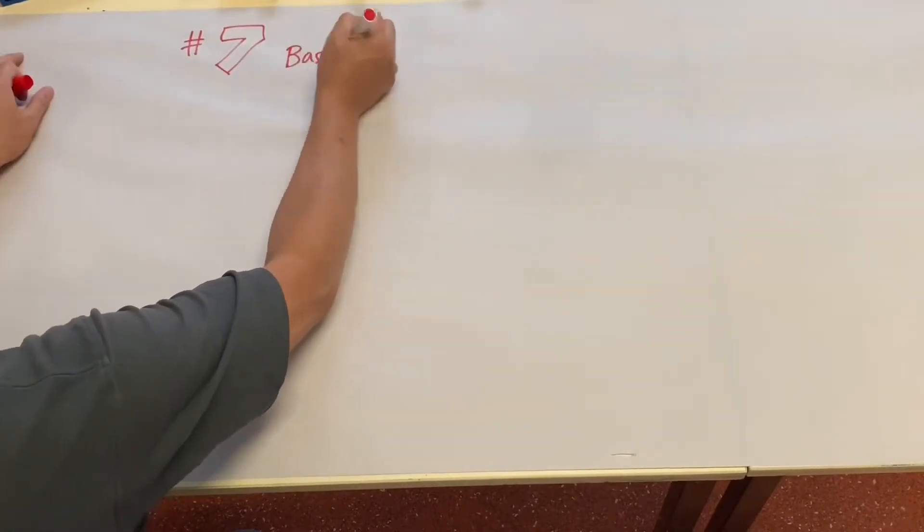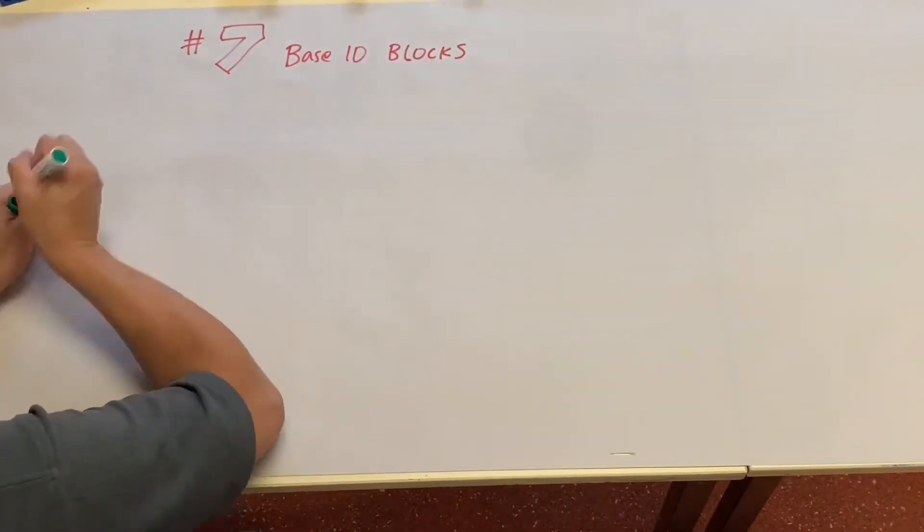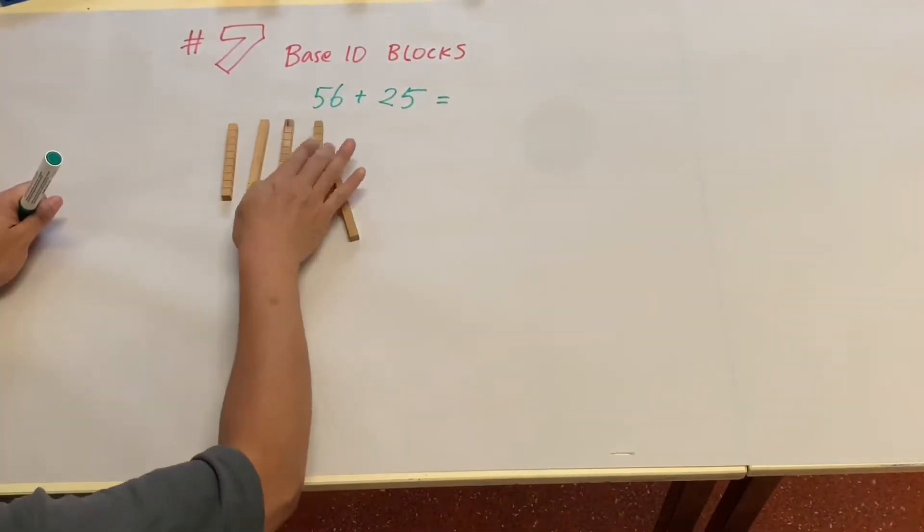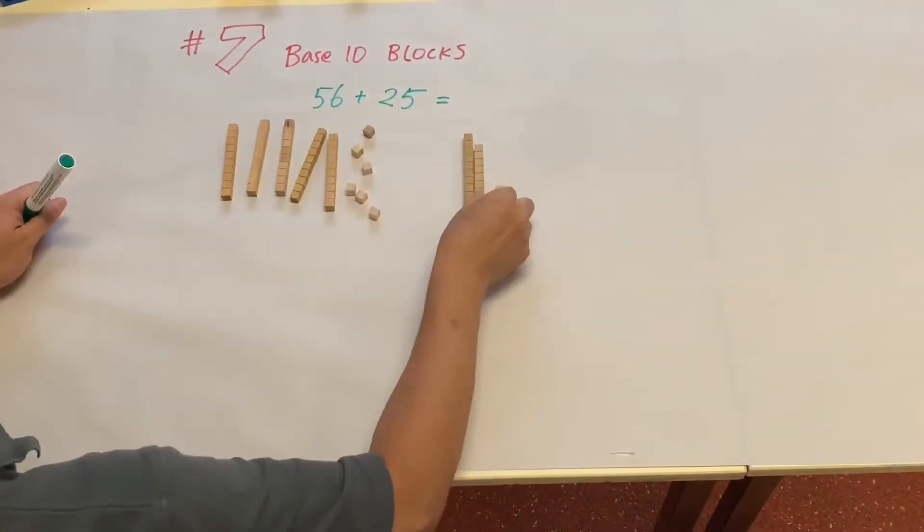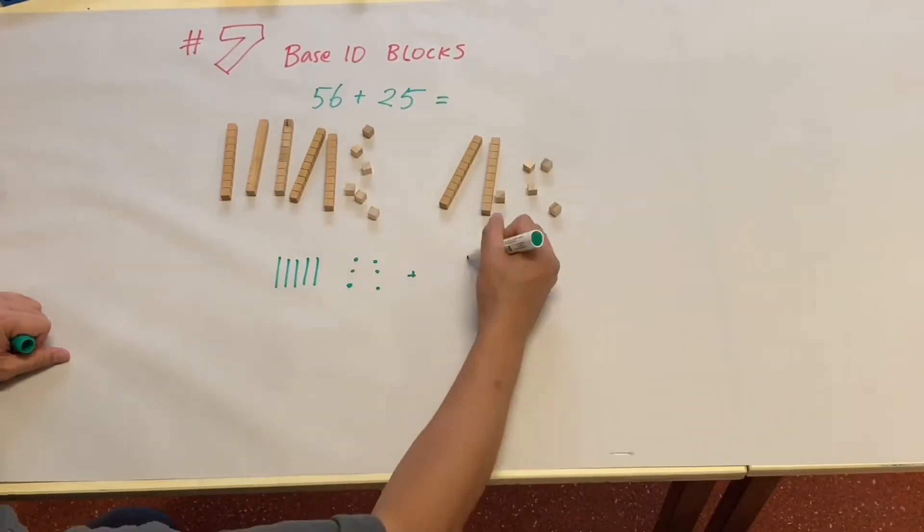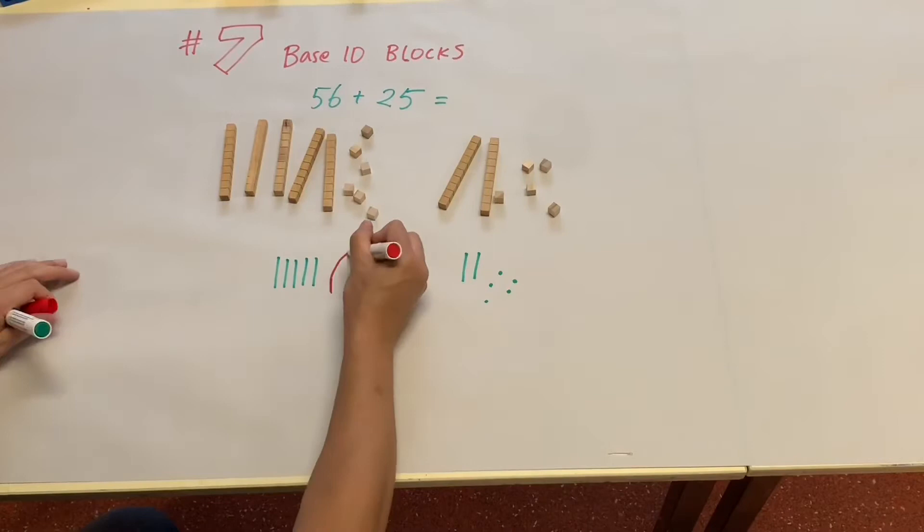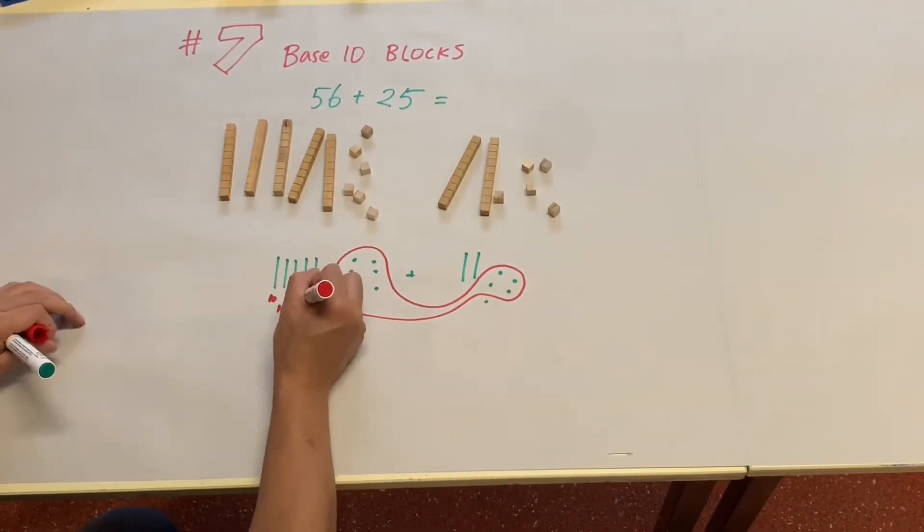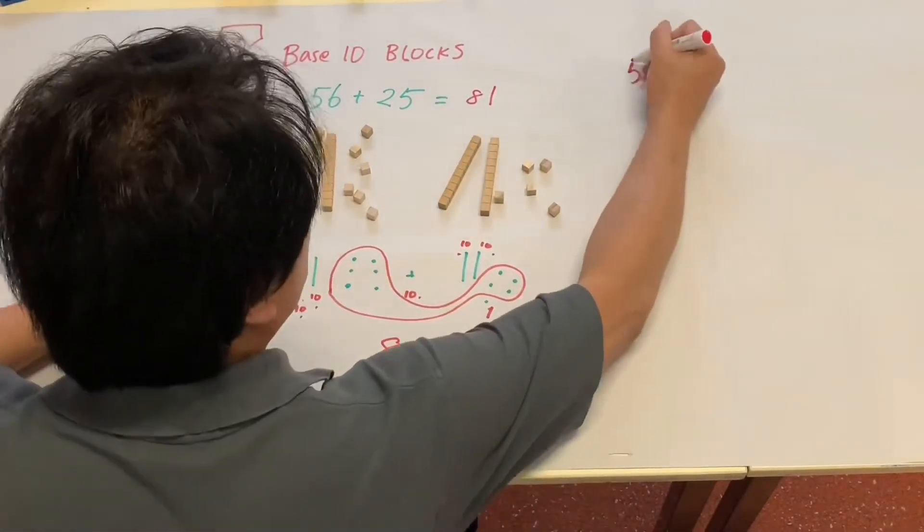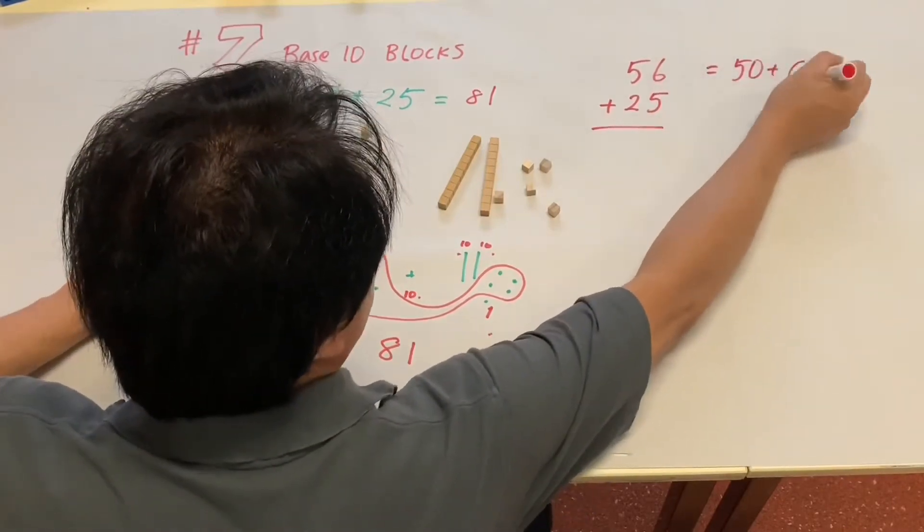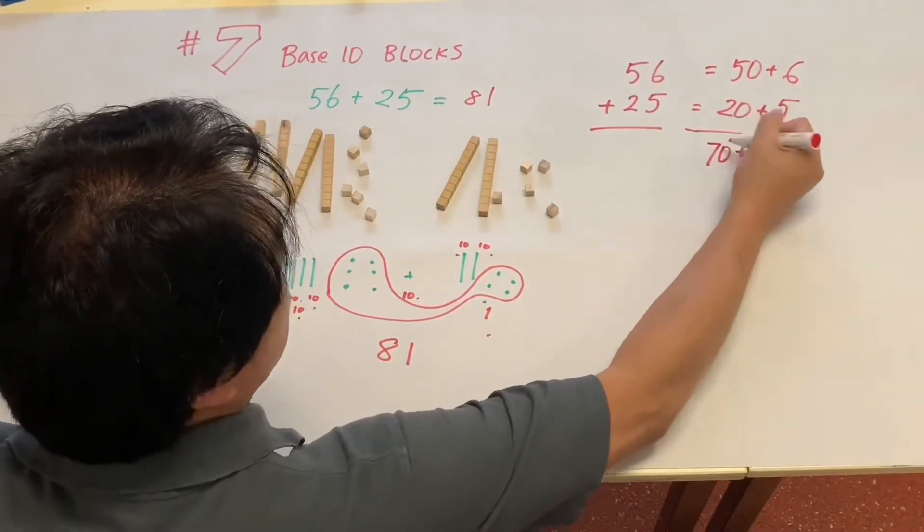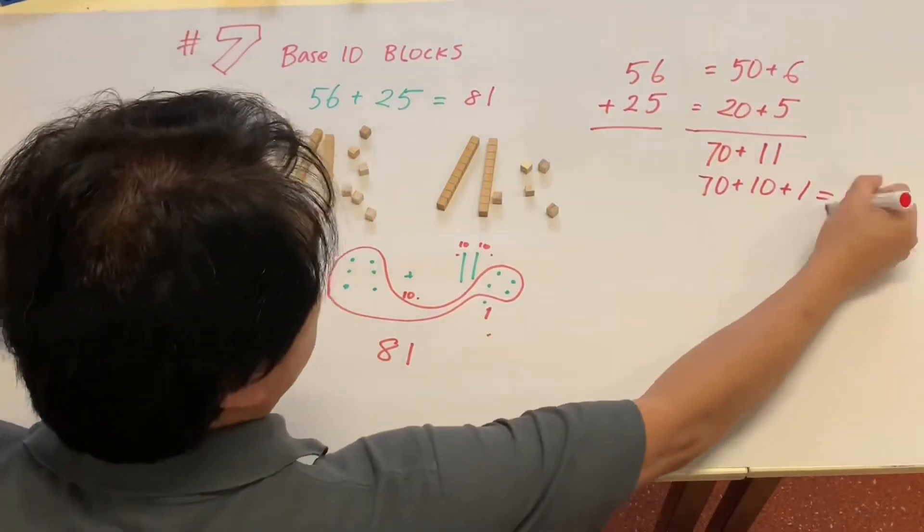Video number seven we're going to use base 10 blocks. So the example is 56 plus 25. It is important to use concrete material, also the drawing representation. So 56 plus 25, using the 5 and a 4 to make 10, the answer is 81. Also, the expanding model of addition is extremely important. So 56 is 50 plus 6, 25 is 20 plus 5, adding together is 81.